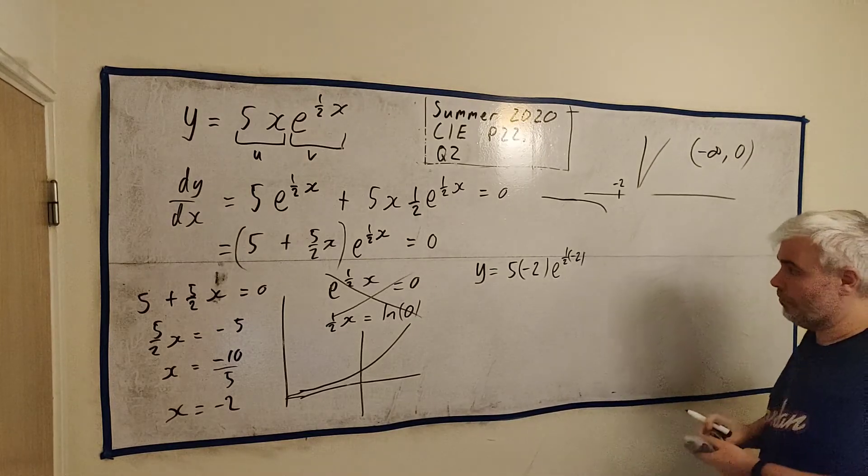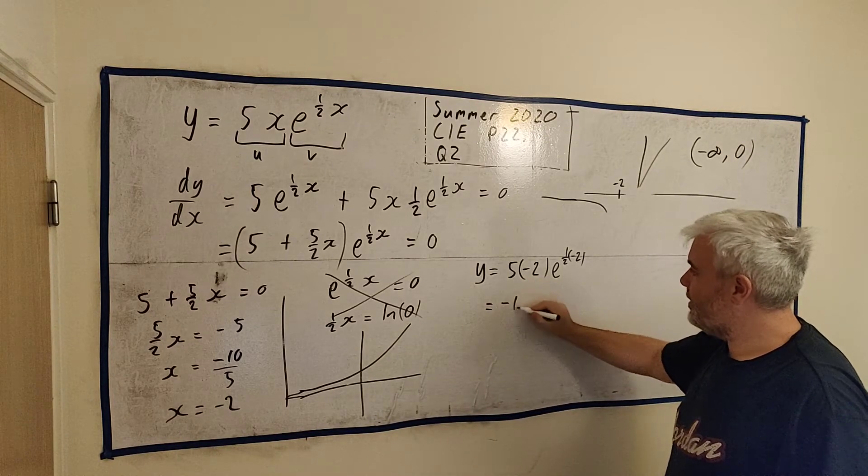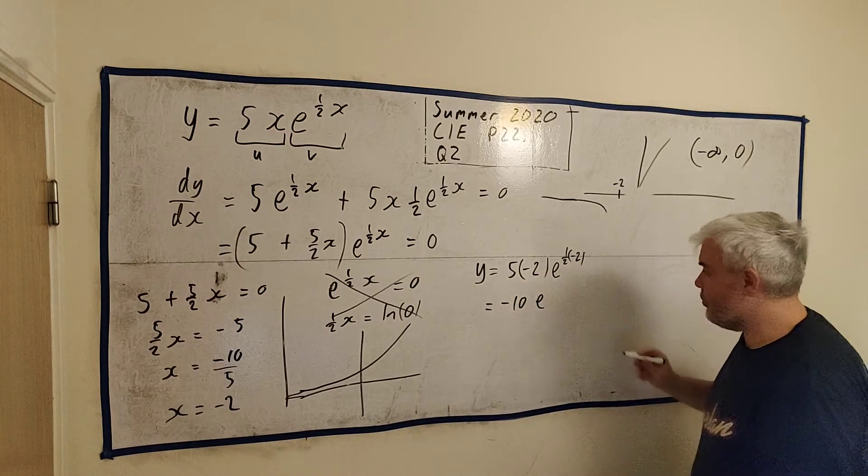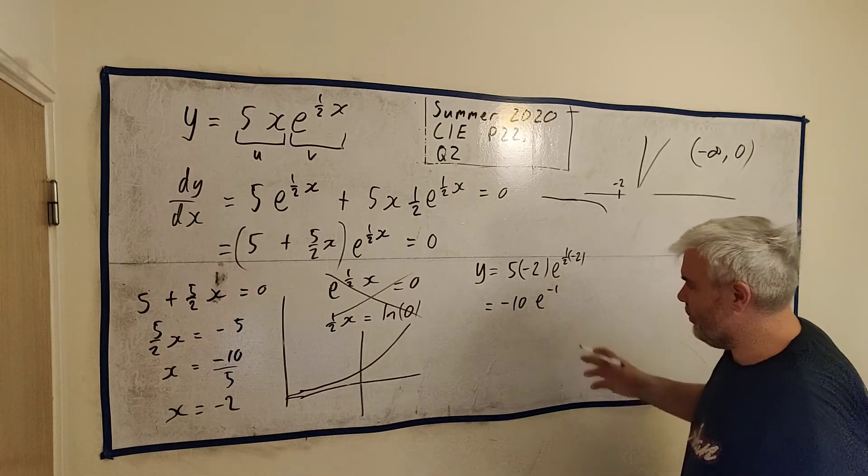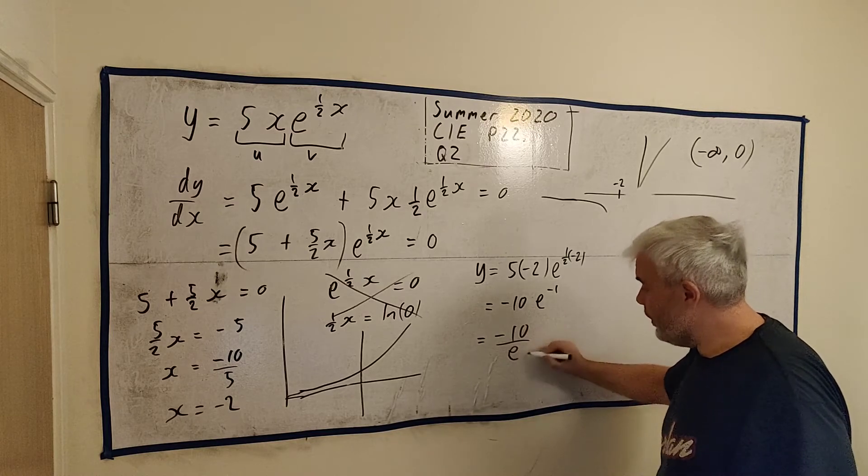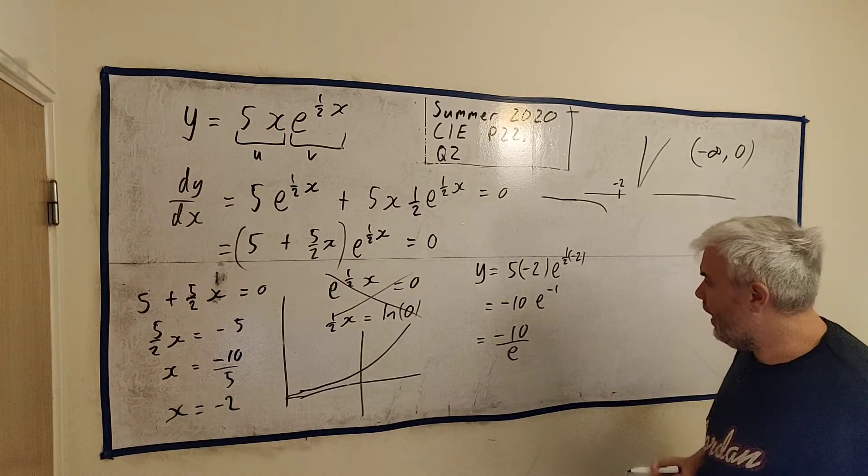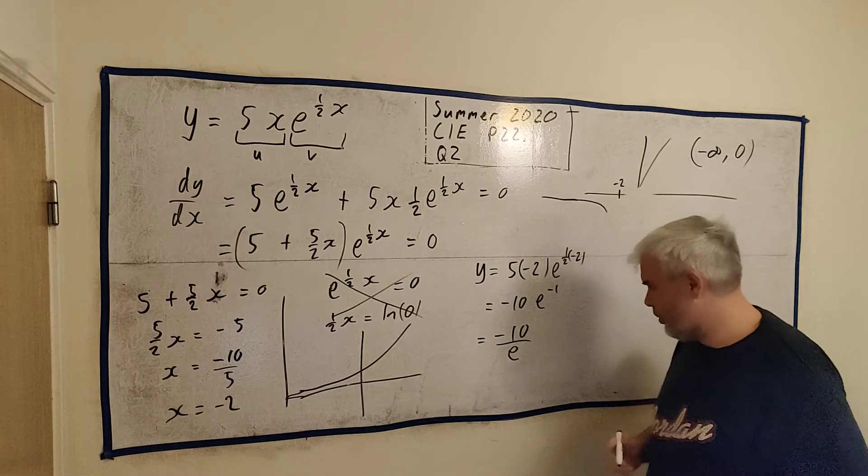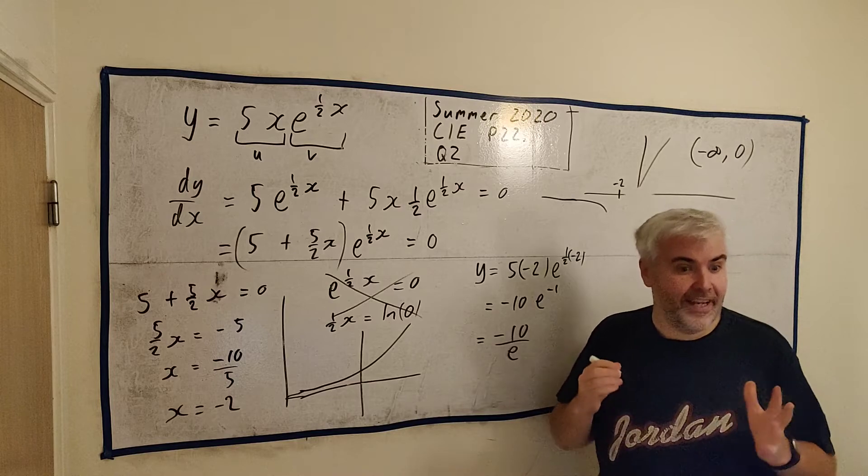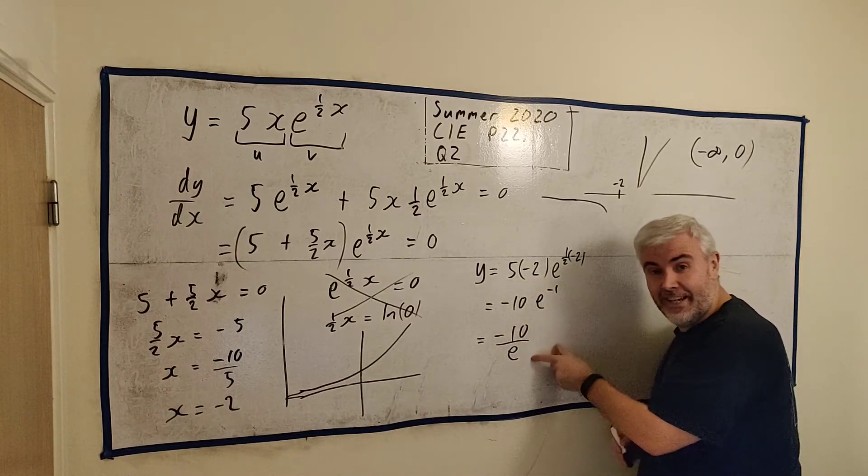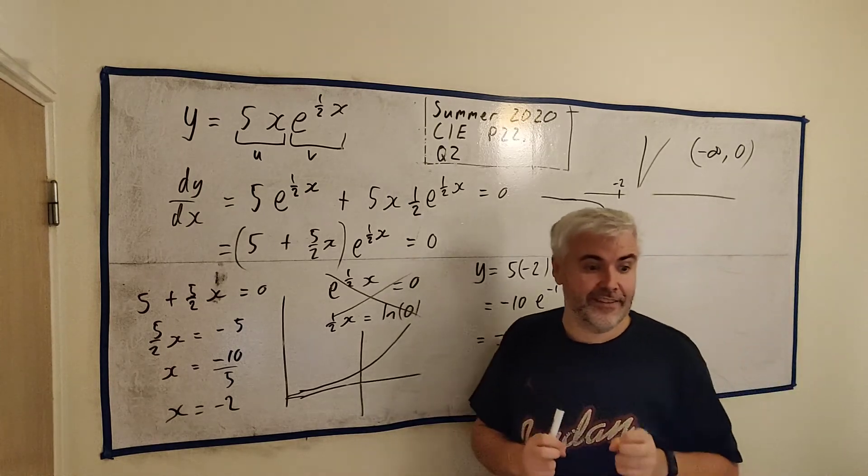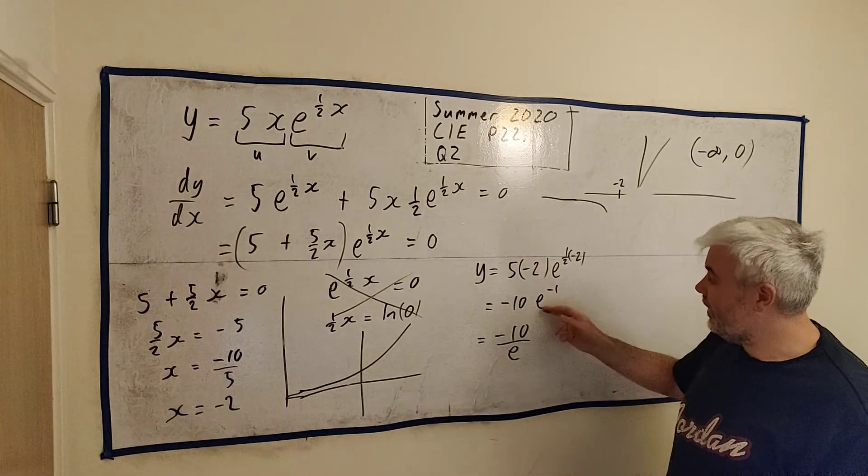So that's what y is equal to. We can clean this up a lot. We get minus 10. e to the power of a half times minus two is minus one. Well, that's an answer. That's already an answer. Or we could leave that as minus 10 over e. Either of these are fine. You could put that in a calculator and get an answer. The answer would be about three point something, 3.7. But that's not an exact answer. This is an exact answer. Either of these. These are exact answers.